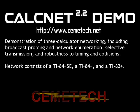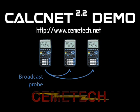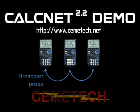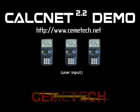The following video shows CalcNet 2.2 in action, transmitting and receiving between a three-calculator network. Each calculator sends its unique address to each of the other calculators in response to a broadcast probe. Once each calculator has found all of the other calculators on the network, it can be assigned a position in the Pong game shown in this demonstration.